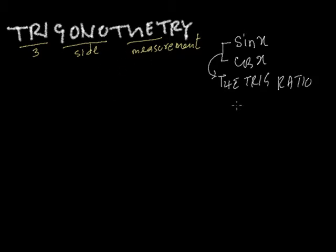As we define trigonometry, we also need to know what ratios are. When we talk about ratios, we are talking about two things divided. So the ratio of a to b is a divided by b. With that in mind, what are trigonometric ratios?